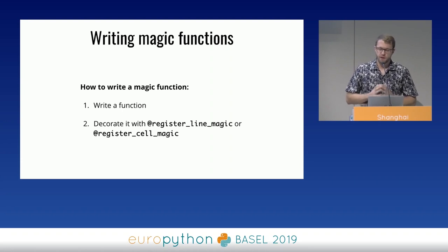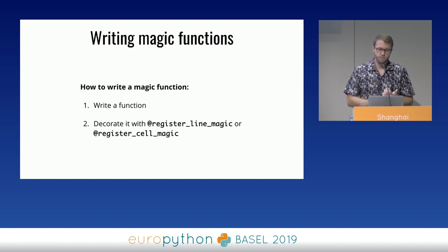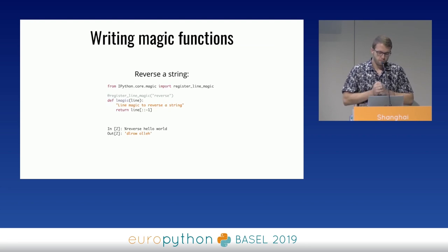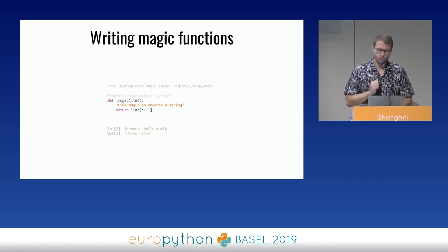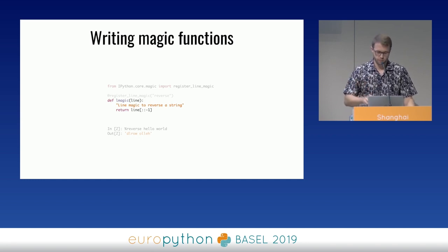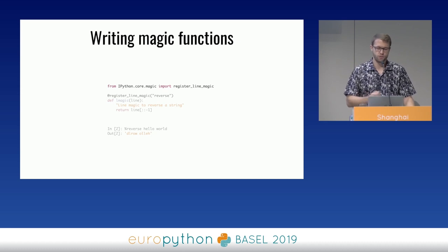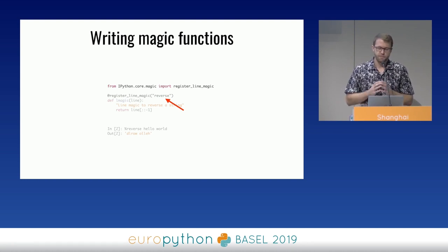What if those 124 magic functions aren't enough? You can very easily create your own. All you have to do is write a function and decorate it with either `register_line_magic` or `register_cell_magic`. Here I'm creating a magic function that will reverse any string I pass. First, write a function that takes an argument and returns the reversed version — each line magic function should accept at least one parameter, the string that will be passed when we call it. Then import `register_line_magic` and use it to decorate the function.